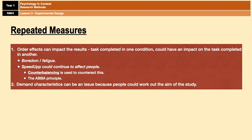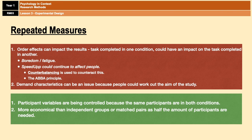The second limitation of repeated measures is that demand characteristics can be an issue. Participants have done the experiment twice, which could mean they work out the aim of the study, leading them to change their behaviour and not act naturally, impacting the validity of results. On the positive side, participant variables are controlled because the same participants are in both conditions — a chatty and shy person will both switch conditions, cancelling each other out. Repeated measures is also more economical: you only need half the participants because all complete all conditions.